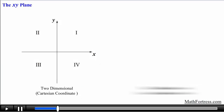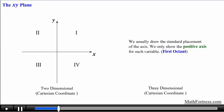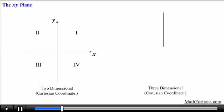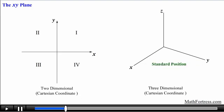When we draw a 3-dimensional coordinate system we usually draw the standard placement of the axes, meaning we only show the positive axis for each variable and we extend the lines for each axis when needed. So we first draw the positive z and y axis, then we extend the x axis from the common point of intersection of the z and y axis. This is the standard position of a 3-dimensional coordinate system.